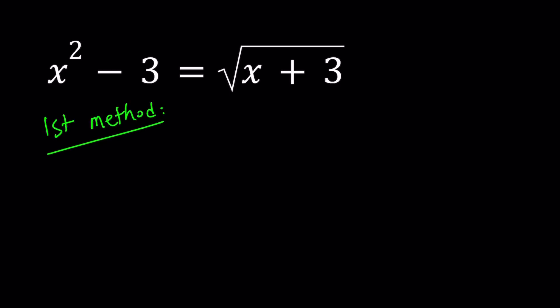So for the first method, I'll be using a brute force method. Square both sides. Eliminate the radical. And from here we get the following. x to the fourth minus 6x squared. Remember, a minus b quantity squared. Plus 9 equals x plus 3.